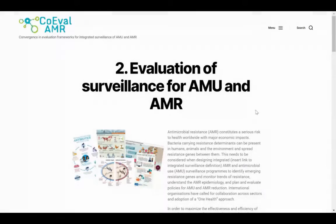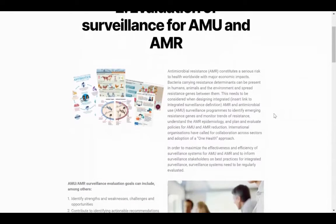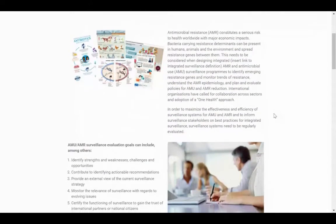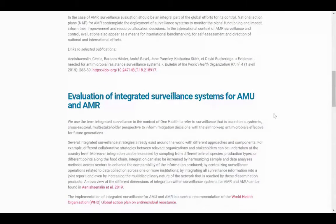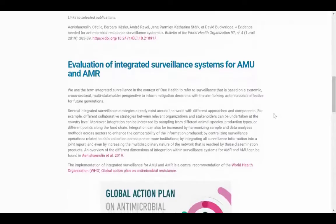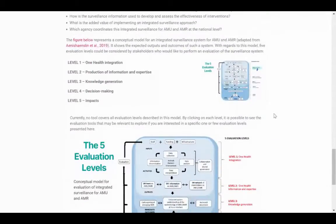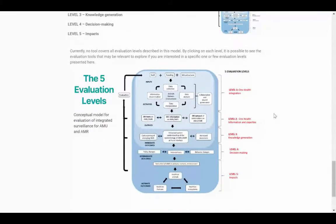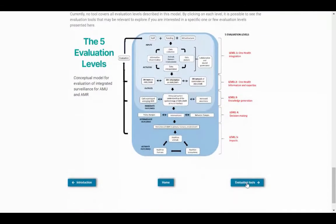Section 2 – Evaluation of Surveillance for AMU and AMR. This section presents the goals of AMU and AMR surveillance evaluation and discusses the differences between integrated and non-integrated surveillance systems. It introduces the One Health approach as a collaborative means of tackling AMR and its driver, AMU. It also provides a conceptual model of the different evaluation levels for an integrated surveillance system.